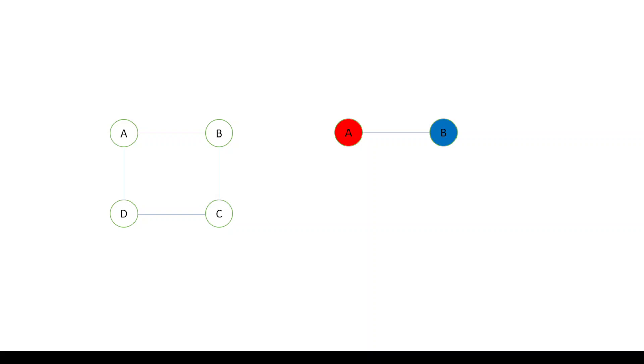Let's take a simple example of a graph with four vertices. We start by choosing vertex A and assigning it a red color. We move to vertex B and assign it blue, since it must not conflict with its neighbor. Then vertex C is assigned green. Finally for vertex D, we cannot use green or red because those conflict with its neighbors, so D is given blue — no conflict with D's neighbors.